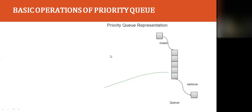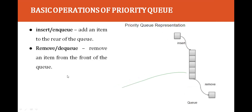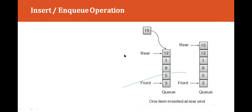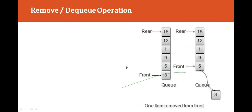Here is an example of a priority queue representation showing insert and remove operations. The insert or enqueue operation adds an item to the rear of the queue; remove or dequeue removes an item from the front of the queue. With values 12, 1, 9, 5, and 3, the front is 3. Whenever an element is inserted, the priority queue inserts the item according to its key value, assuming data with a high value has low priority. The rear is 15.